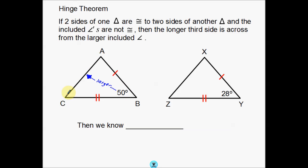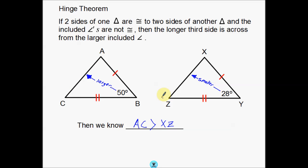Which means this 50 degrees means that AC is going to be larger; 28 is smaller, so this is going to be a small side. We know that side AC is going to be greater than side XZ. So basically what this hinge theorem tells us is a way for us to compare sides of triangles from two different triangles — comparing AC with XZ. But we had to have some criteria first: two pairs of congruent sides and the included angle.